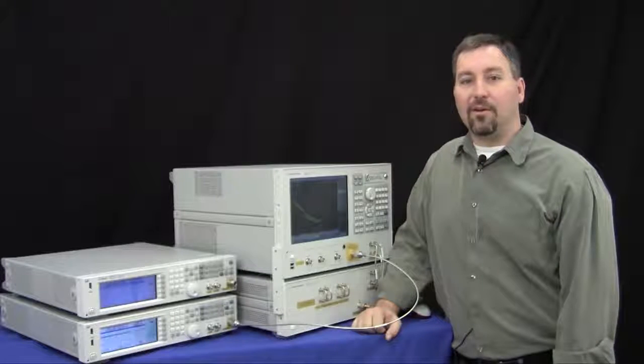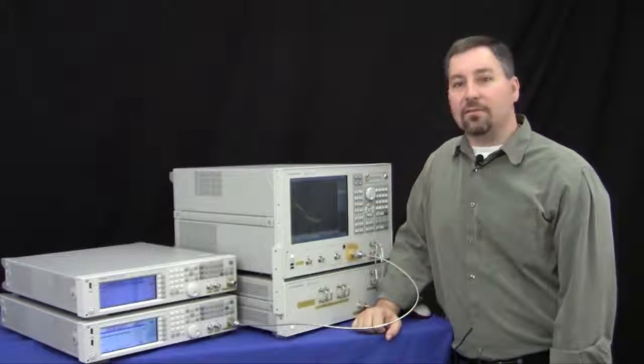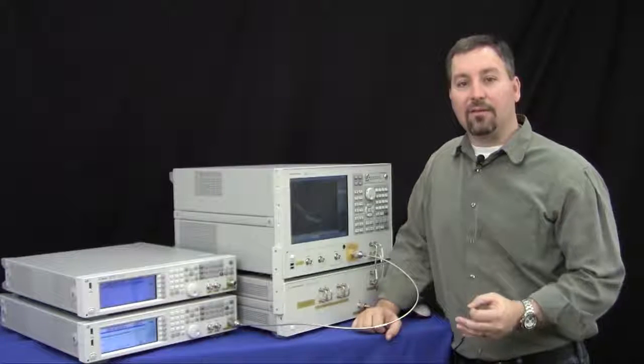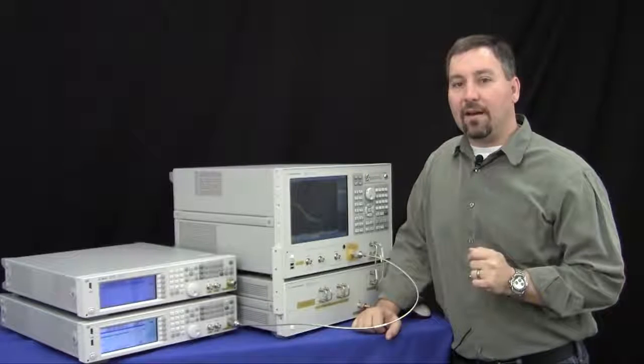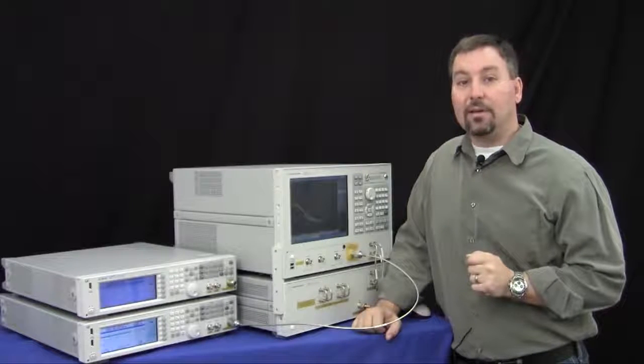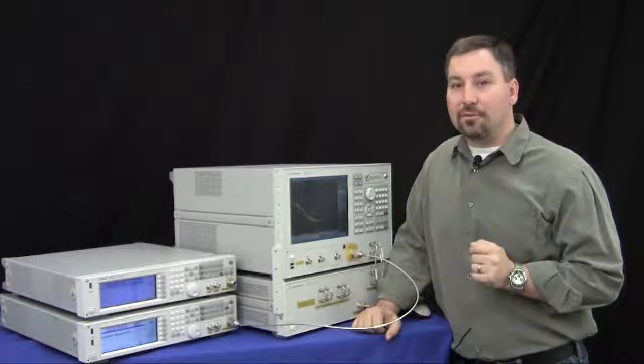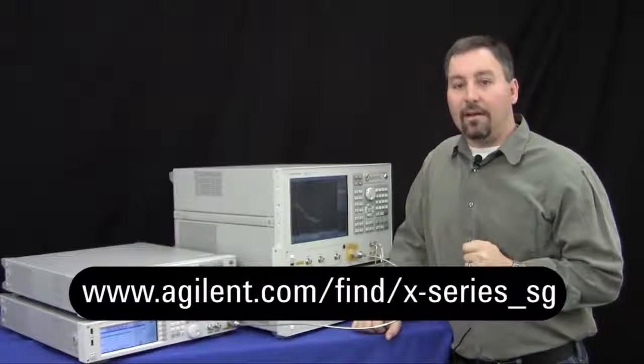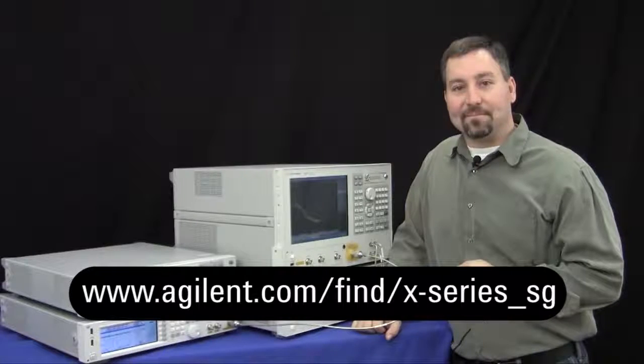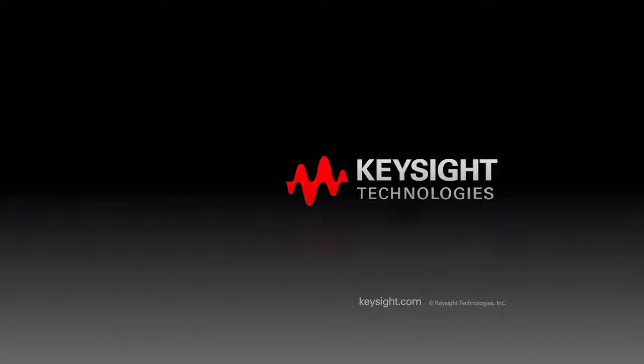Thank you for watching this short video on the X-series MXG phase noise improvements. We've shown that there is a 40 dB improvement at close-in phase noise performance compared to the first generation MXG, 25 dB improvement at pedestal, and 3 dB improvement at broadband. We've also shown how the range of the phase noise impairment has increased. For more information please visit the URL and thank you for watching.